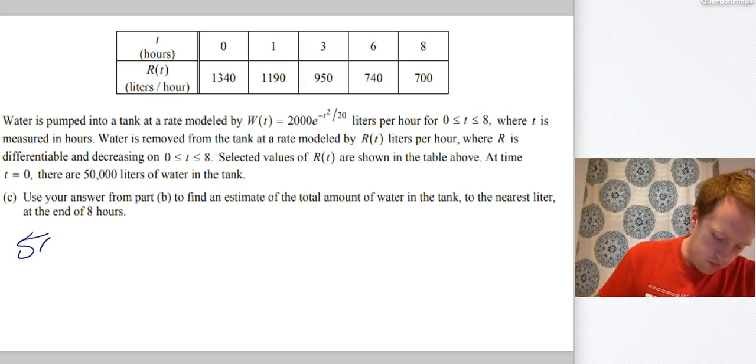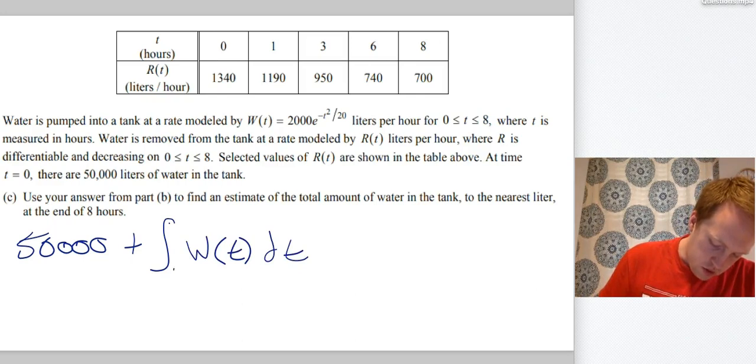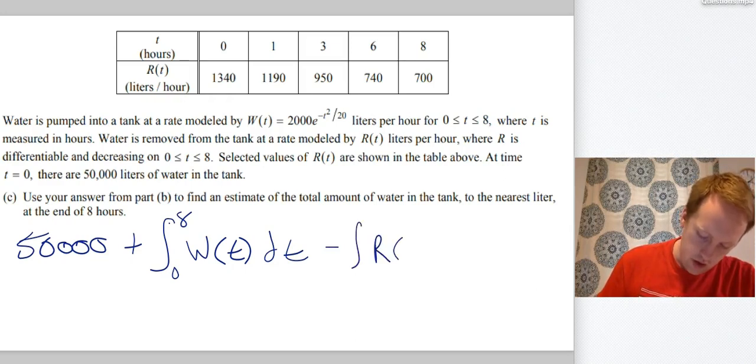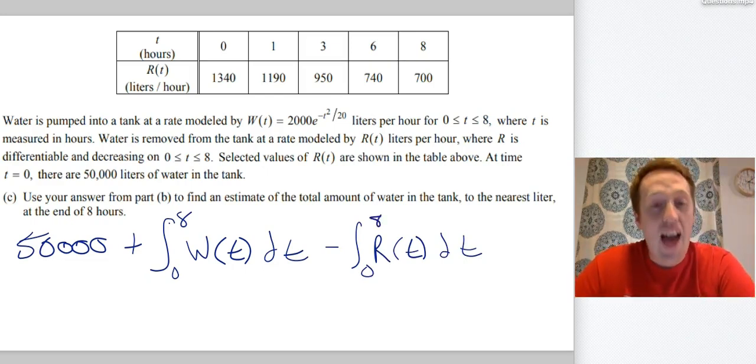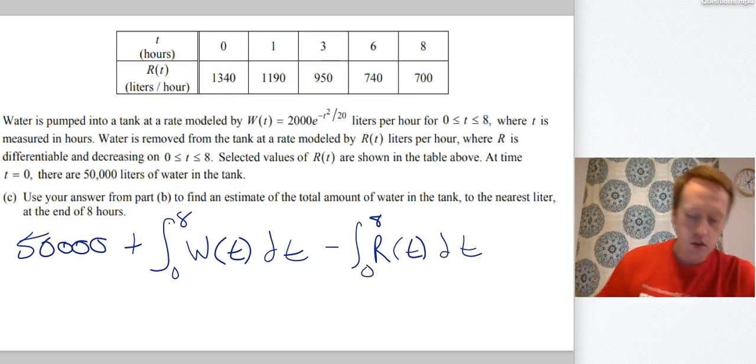So we're going to do 50,000. Water is coming into the tank at the rate W of T. The interval should be zero to eight. Water is coming out of the tank at a rate R of T. Okay. That represents it. That actually would be the value. Now, we don't know how to get the integral from zero to eight for R of T. But we just estimated in part B and that's what C is telling us to do. Use the answer from part B to find an estimate of the total amount of water in the tank.